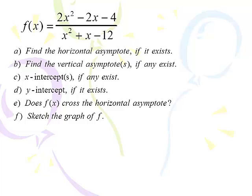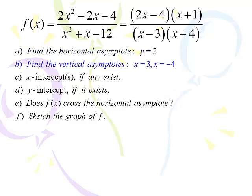Let's find the horizontal asymptote, then we'll factor top and bottom, then we'll find the vertical asymptotes. We have x squared on top and x squared on bottom, so we go to the tiebreaker for the horizontal asymptote. It's 2 over 1, so our horizontal asymptote will be the line y equals 2. Factoring: top is (2x-4)(x+1), bottom is (x-3)(x+4). Vertical asymptotes are x equals 3 and x equals negative 4.